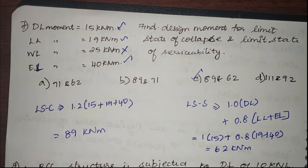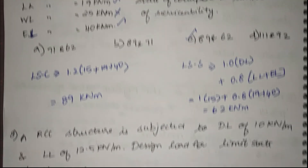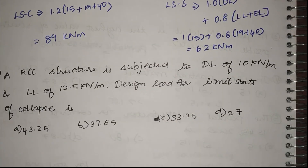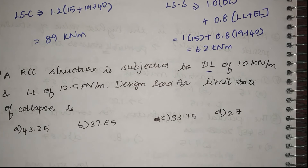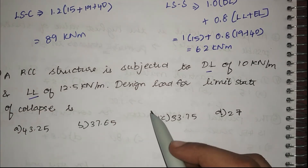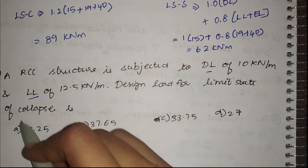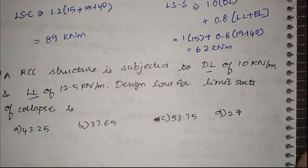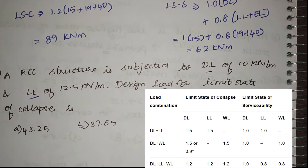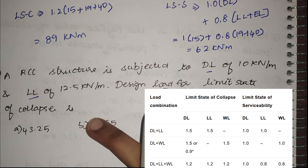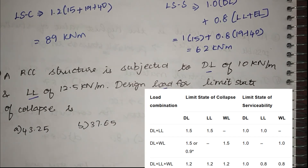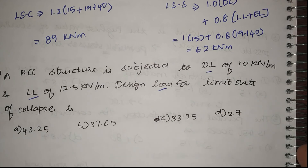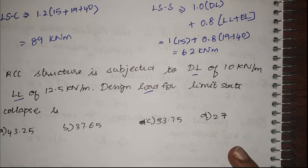The next question: an RCC structure is subjected to a given dead load and live load — find the design load for the limit state of collapse. Here the load combination is simply dead load plus live load, and only collapse is asked, not serviceability. I'm sure you can recall the table and find the answer. Solve it and comment your answers below.